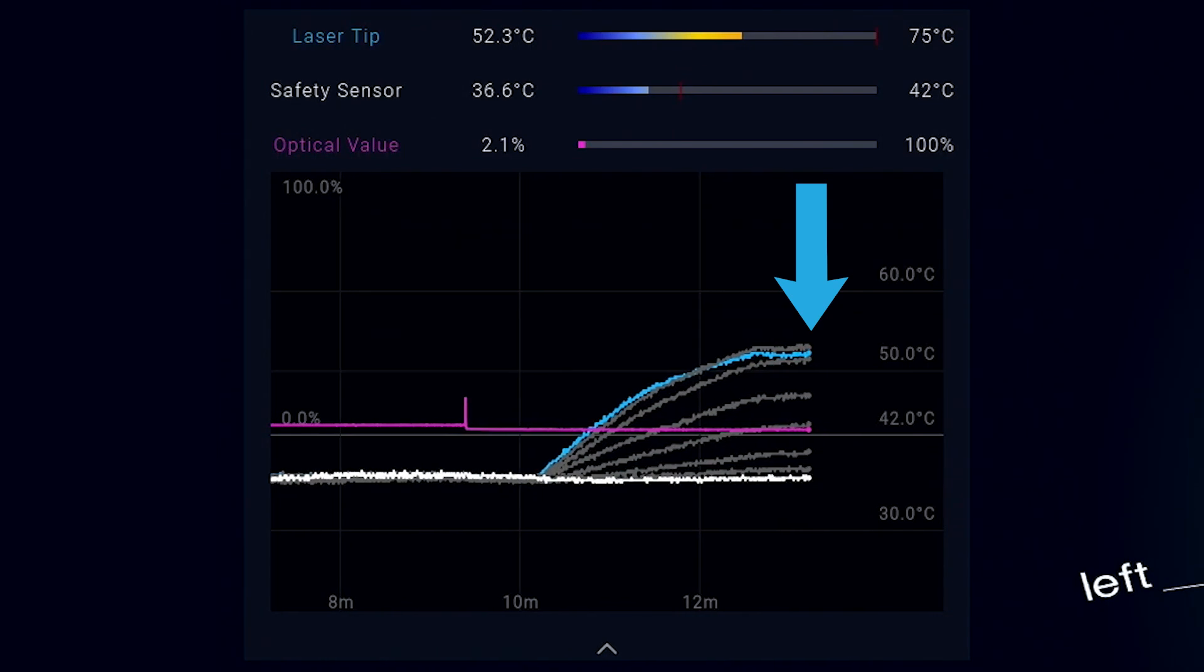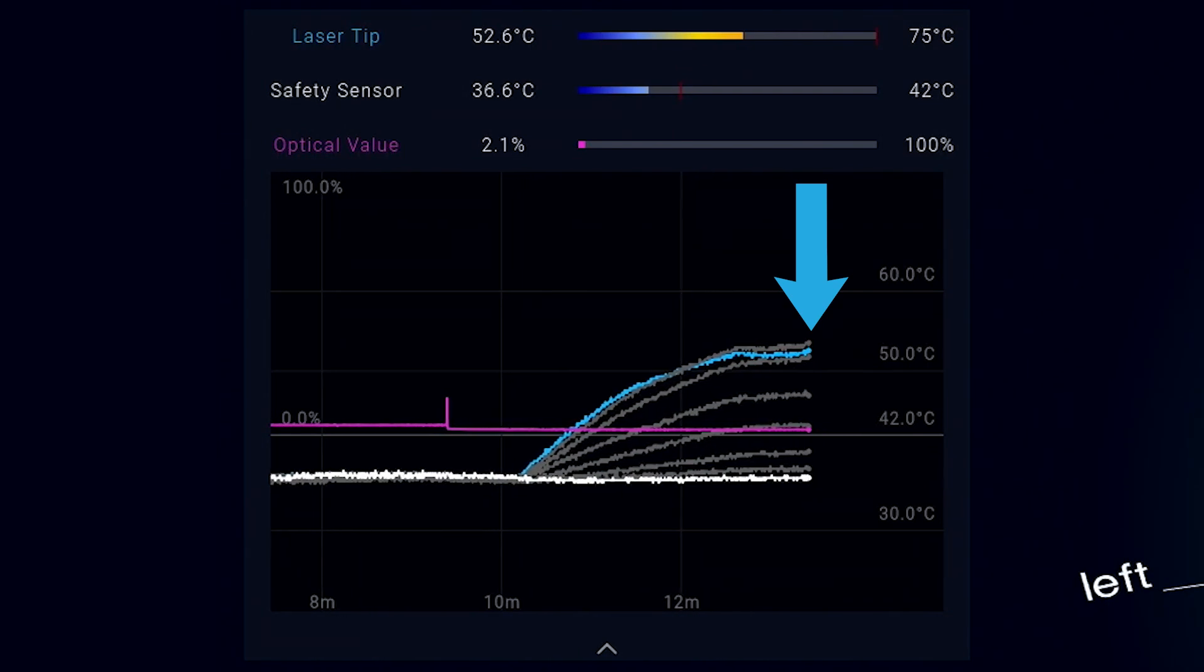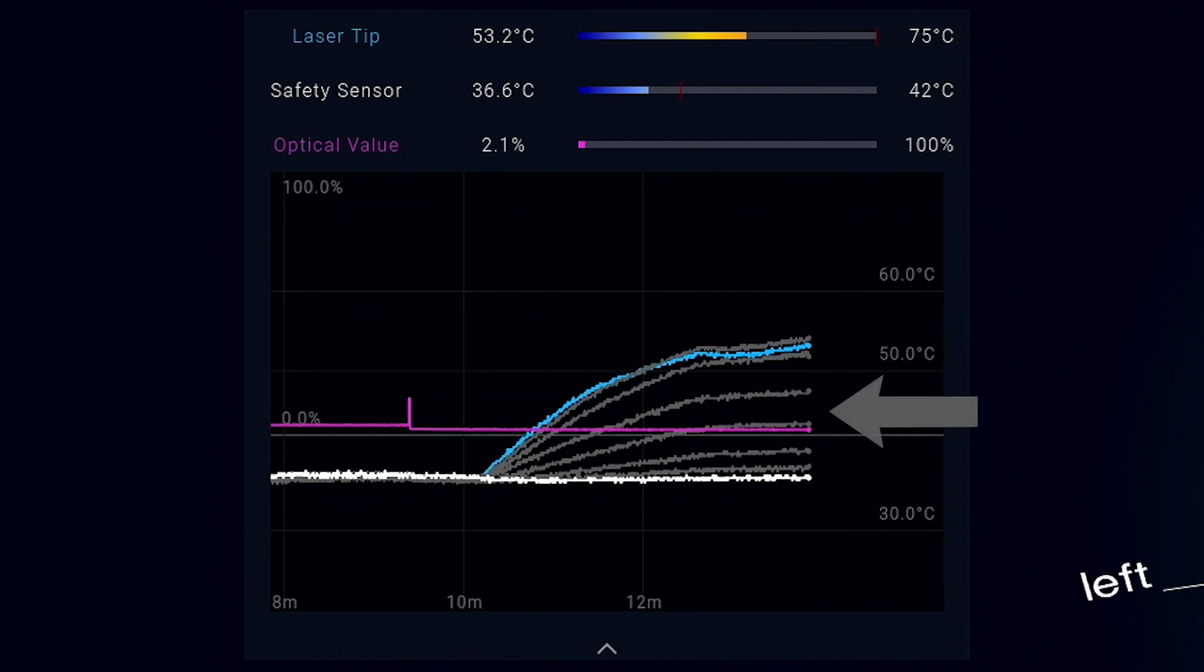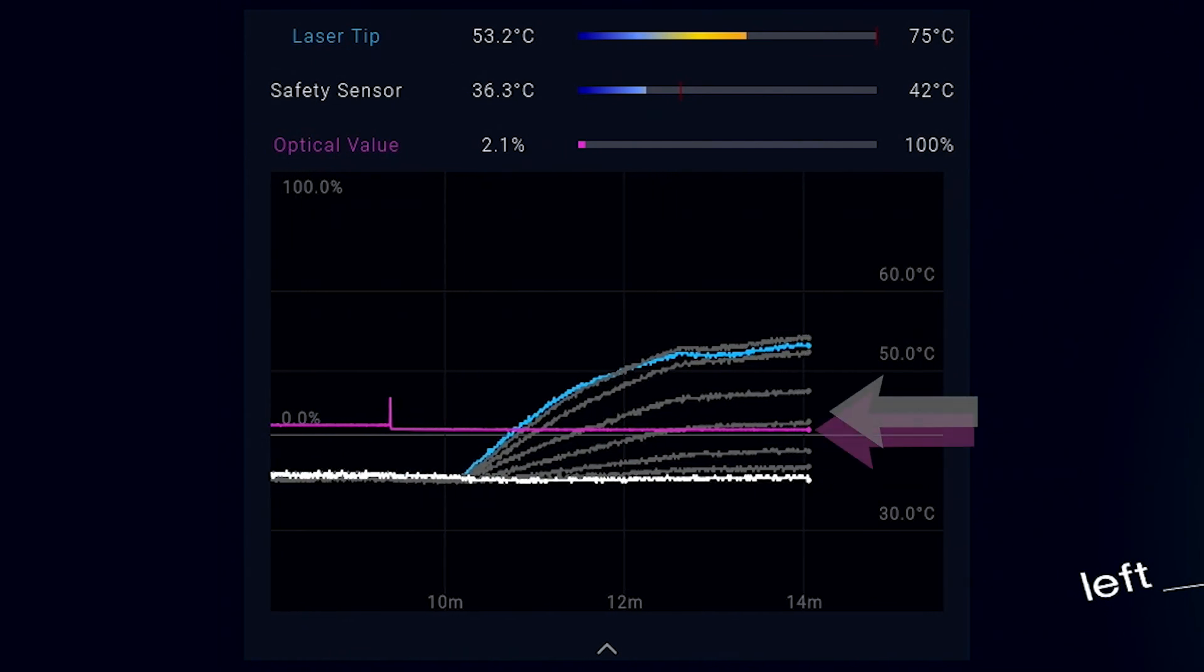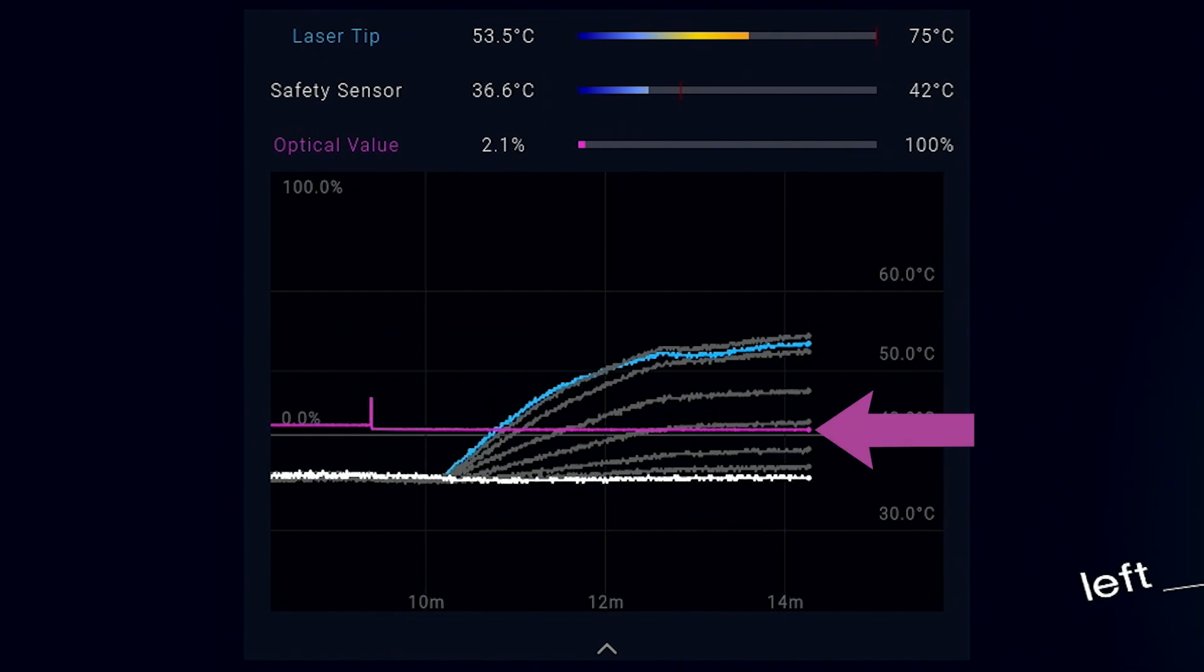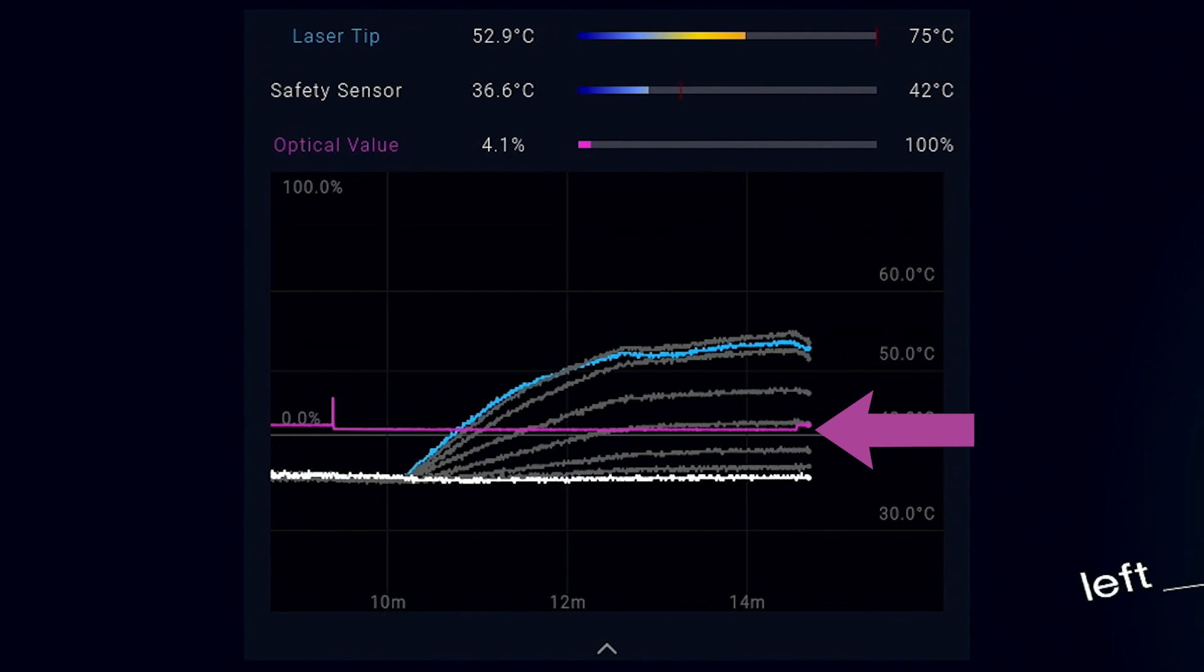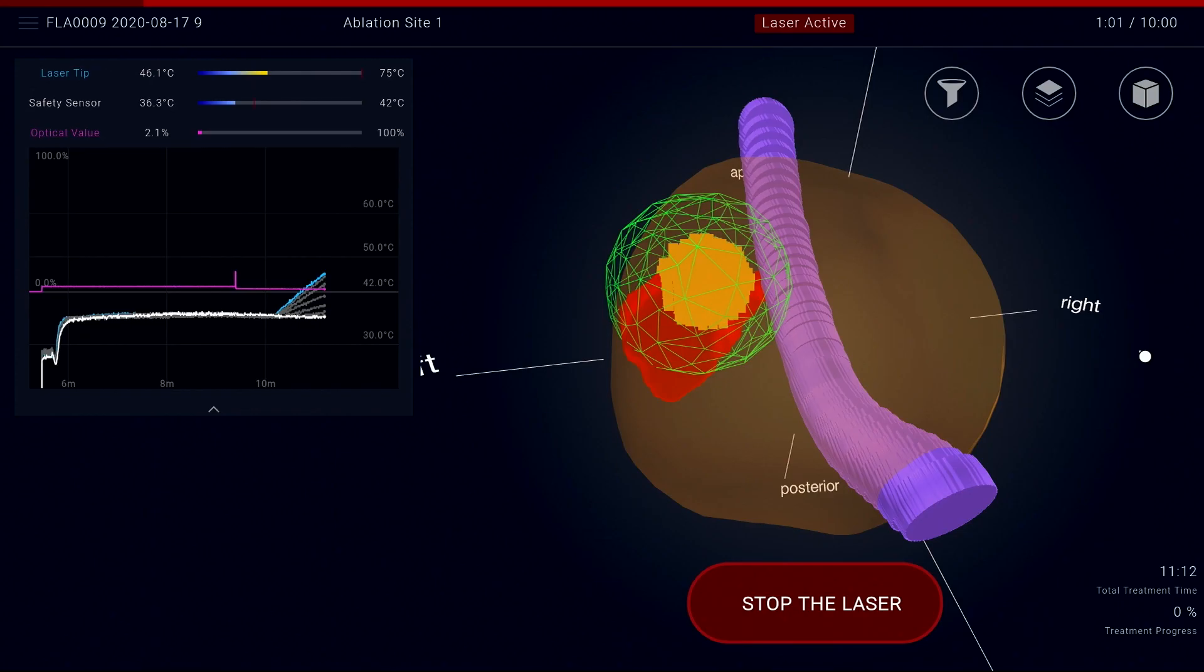The thermal probe will cause an automatic shutoff if the laser tip temperature exceeds 75 degrees. The intervening thermocouples are displayed as gray lines. A pink line shown here corresponds to an experimental optical sensor which may monitor tissue ablation in the future. Approximately 5 minutes is required for each ablation.